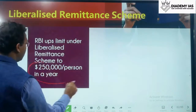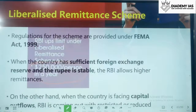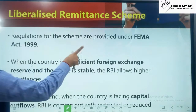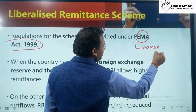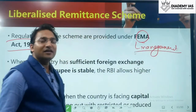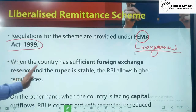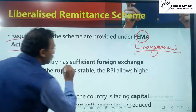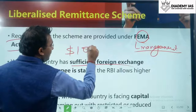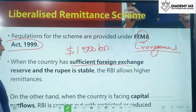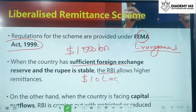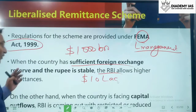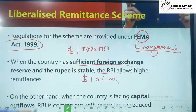Regulations for the scheme are provided under the FEMA Act 1999. The RBI is responsible for managing foreign exchange. When the country has sufficient foreign exchange reserves and the rupee is stable, RBI allows higher remittances. For example, if India had a thousand billion dollars in foreign exchange reserves, RBI could allow up to 10 lakh US dollars per person per year. If reserves are high, higher remittances are allowed, and vice versa.